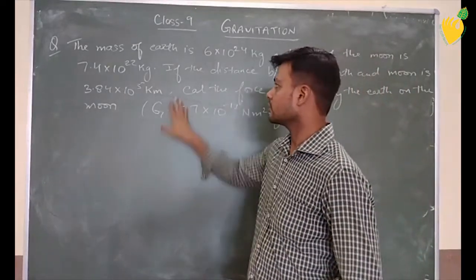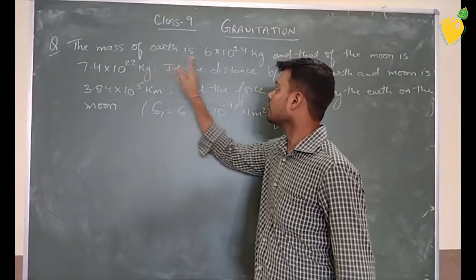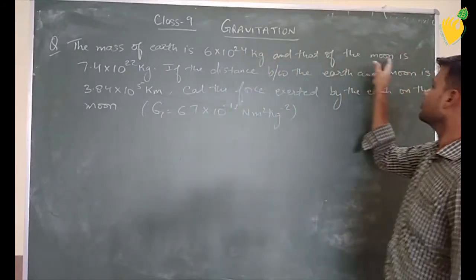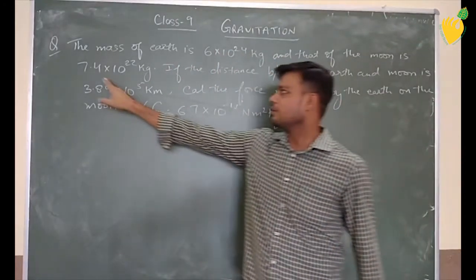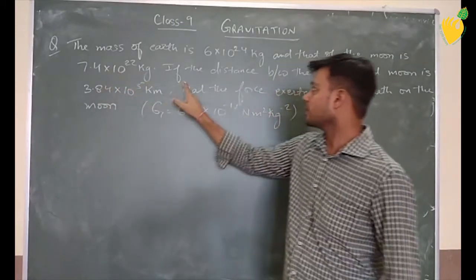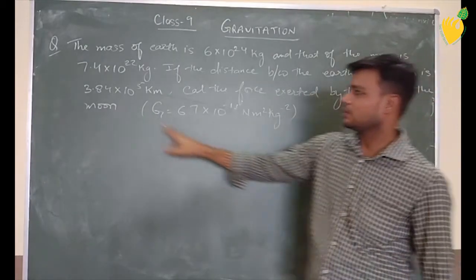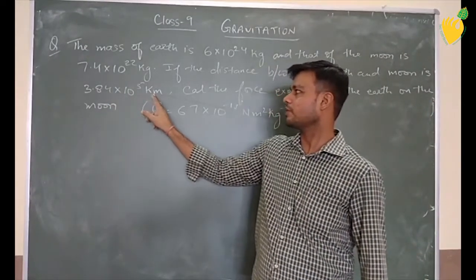Now students, this is the next problem. The mass of Earth is 6 into 10 to the power 24 kg and that of the moon is 7.4 into 10 to the power 22 kg. If the distance between the Earth and the moon is 3.84 into 10 to the power 5 km,